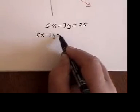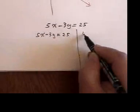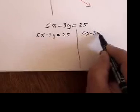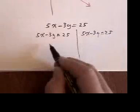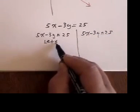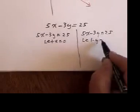5X minus 3Y equals 25. 5X minus 3Y equals 25. I let X equal 0. I let Y equal 0.